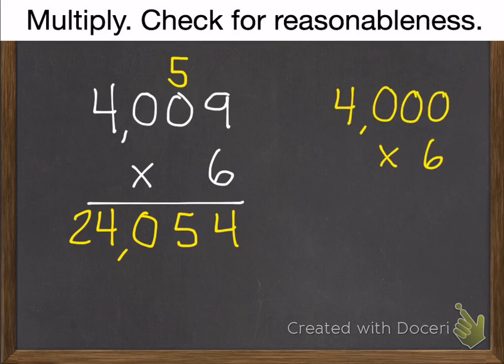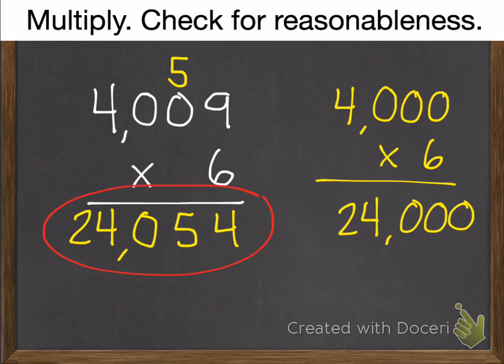Let's check it. That will give you 24,000. So that is reasonable.